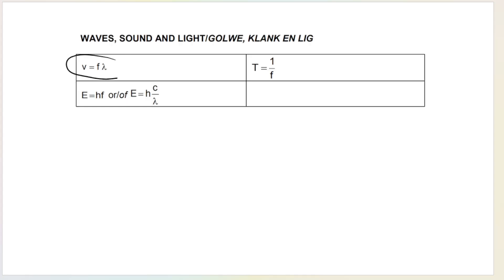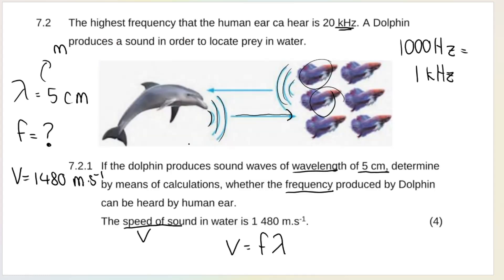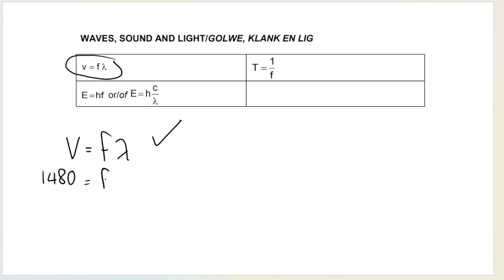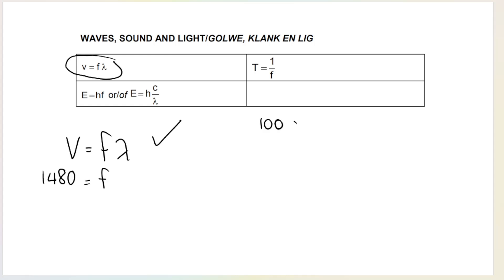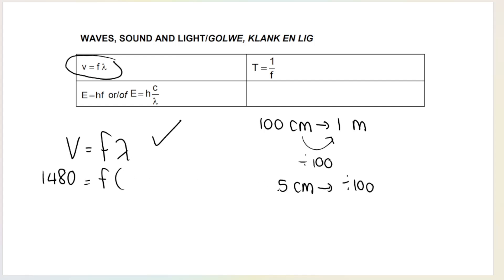Use the formula v = f × λ from your formula sheet. Write your formula first - that gets you a mark. Then substitute your values: speed is 1,480 m/s. Convert 5 centimeters to meters by dividing by 100, giving 0.05 m. So rearranging, frequency equals 1,480 divided by 0.05, which gives a frequency of 29,600 hertz.